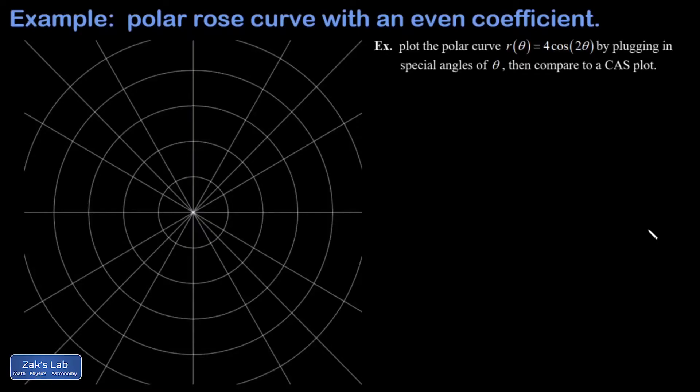In this video we're asked to plot the polar curve r(θ) = 4cos(2θ), which is known as a polar rose or rose curve, and we're going to do this by plugging in some special angles of θ.